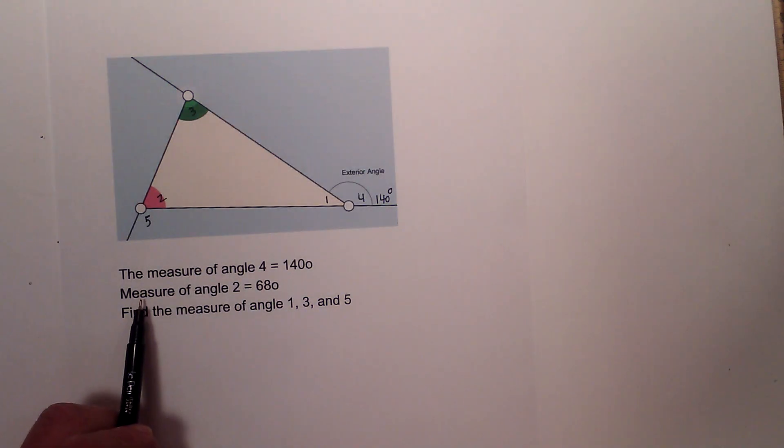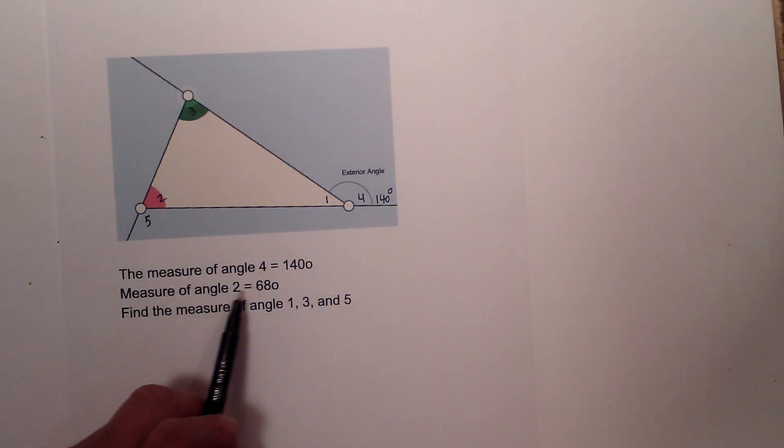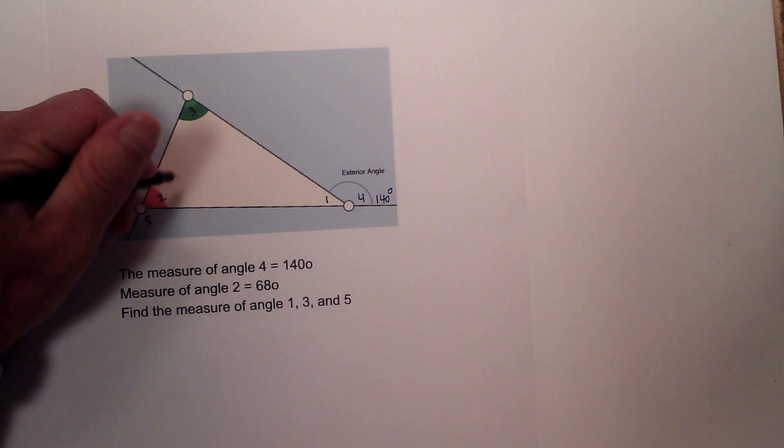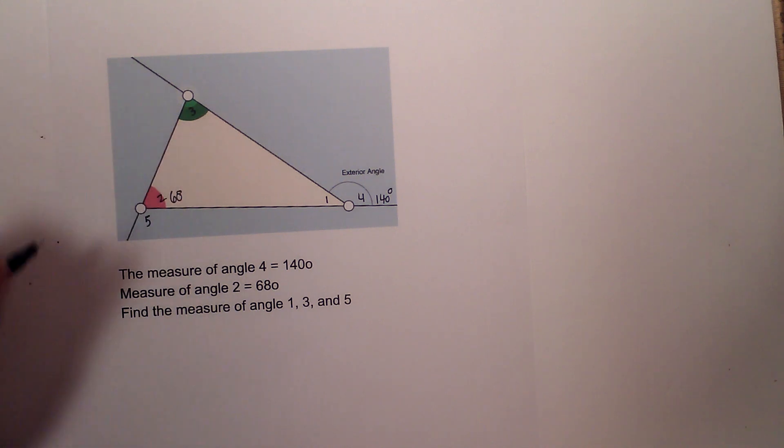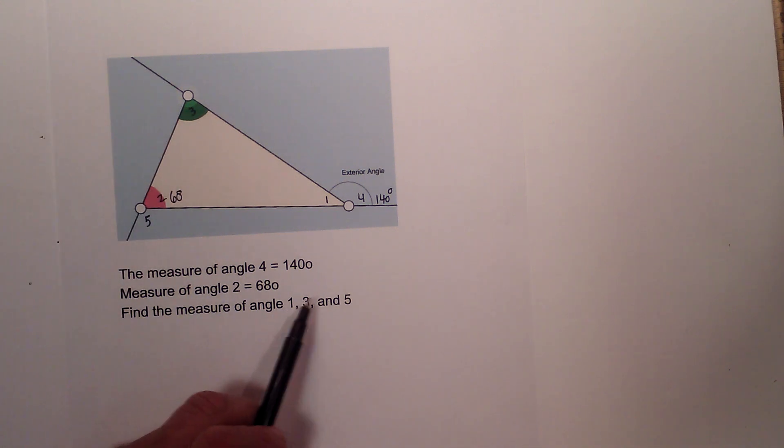Now let's look at this. The measure of angle 4 is 140 degrees. So this is 140 degrees. The measure of angle 2 is 68 degrees. So this is 68. Find the measure of 1, 3, and 5.